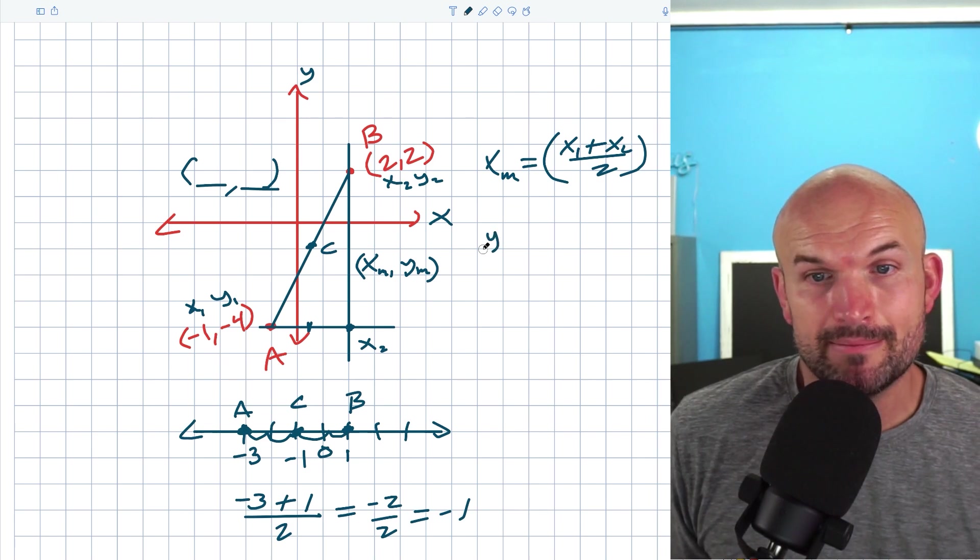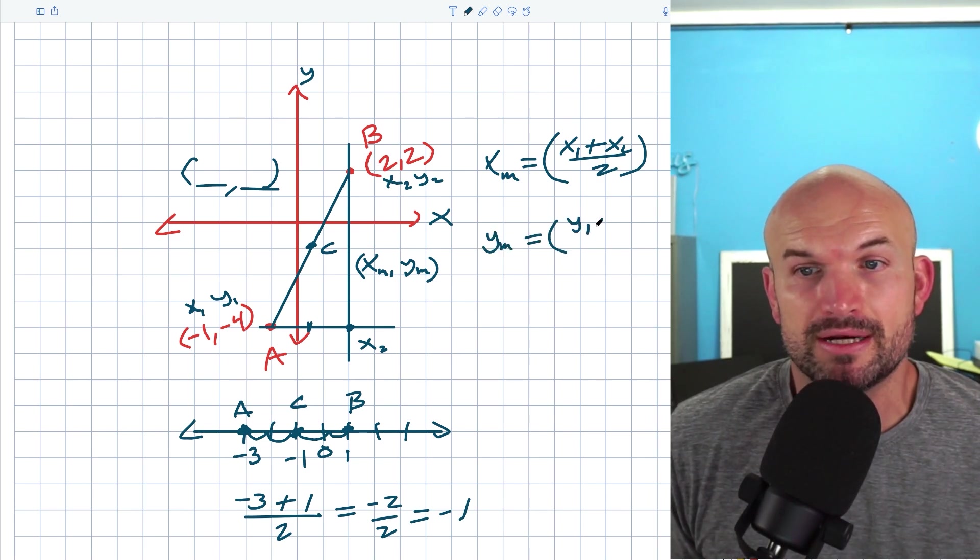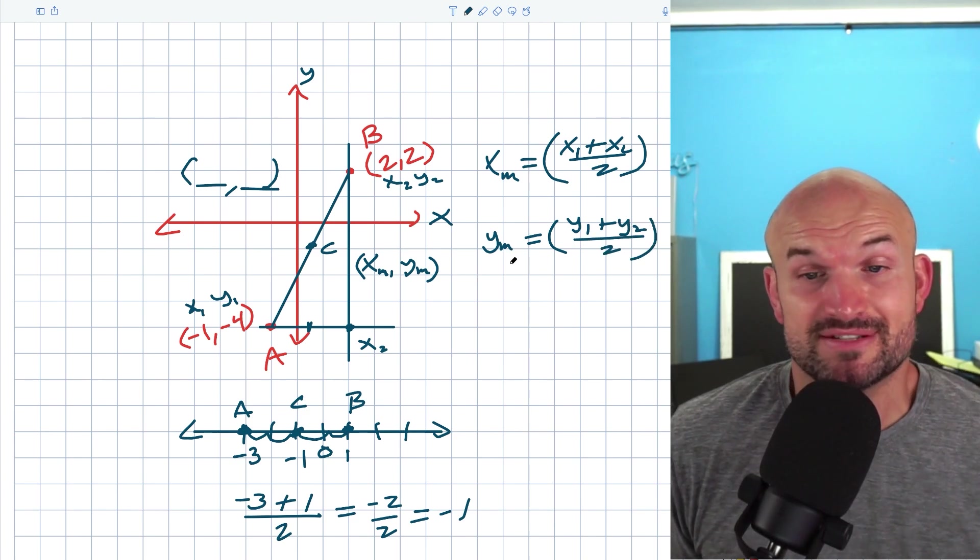And then to find Y_M, which is the midpoint for Y, I'm going to basically do the same thing for the Ys. I'm going to say Y1 plus Y2 divided by two. So now let's just actually go ahead and figure out what these values are going to be.